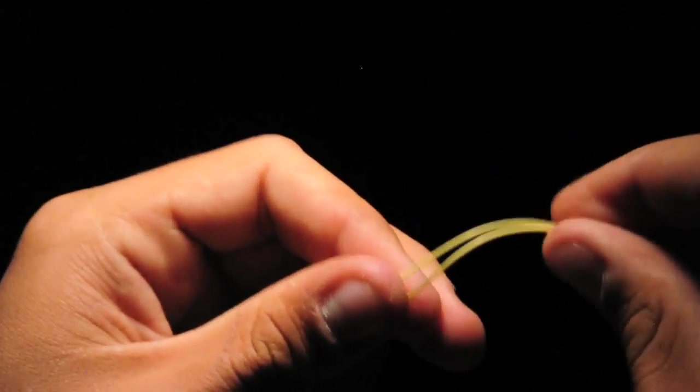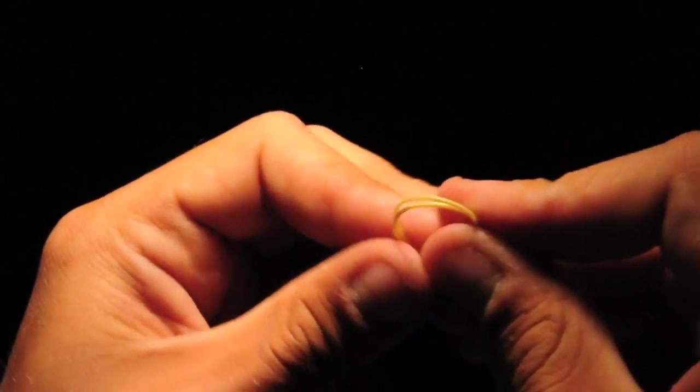Take the doubled line and create a loop and pinch the loop between your thumb and your forefinger.